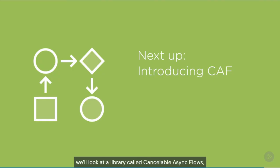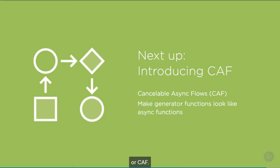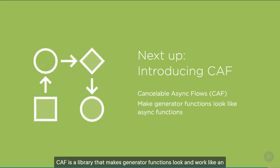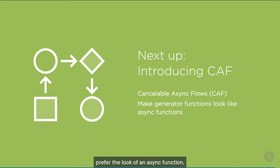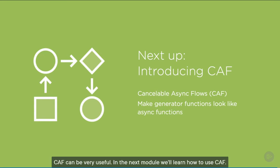Coming up, we'll look at a library called Cancelable Async Flows, or CAF. CAF is a library that makes generator functions look and work like an async function that has the ability to be cancelled. Async functions are usually used more often than generator functions, so for those who prefer the look of an async function, CAF can be very useful. In the next module, we'll learn how to use CAF.